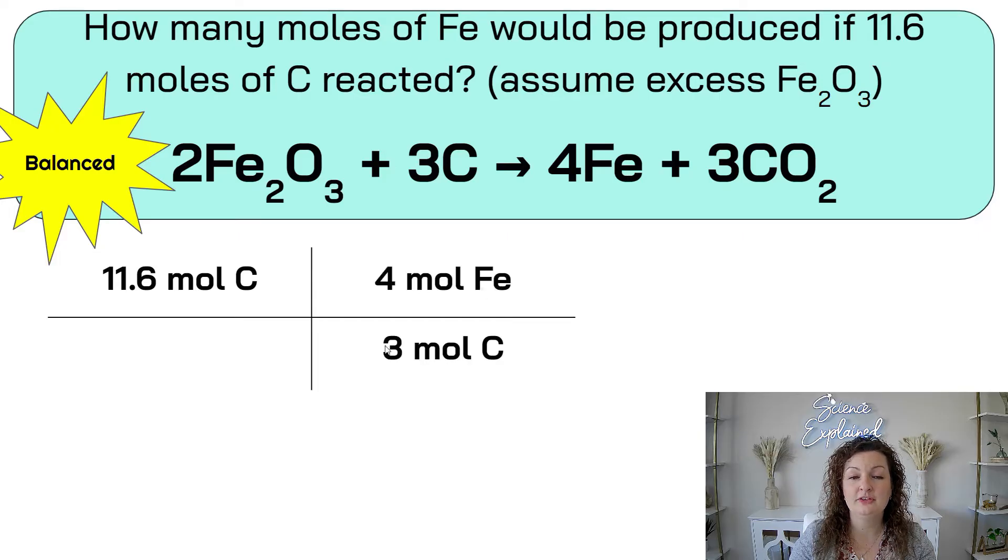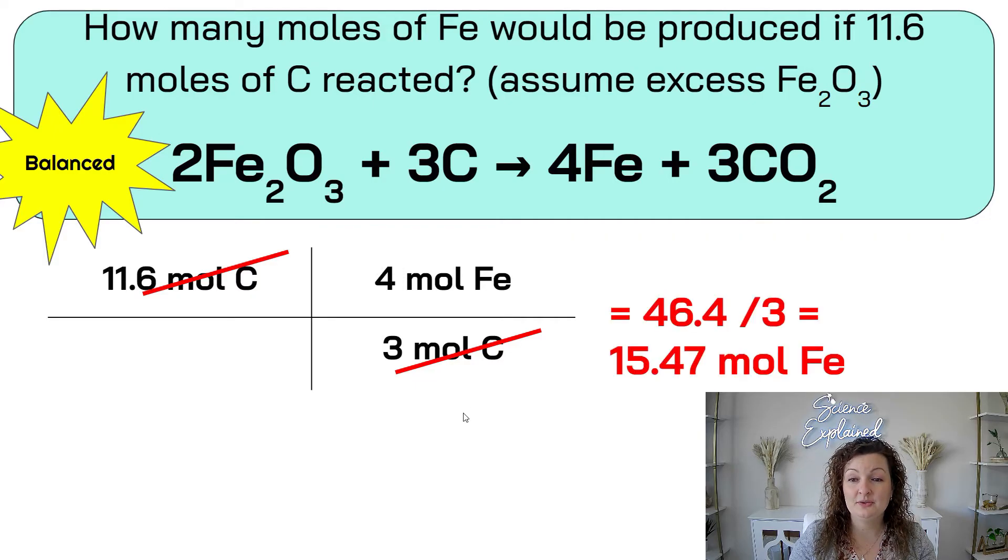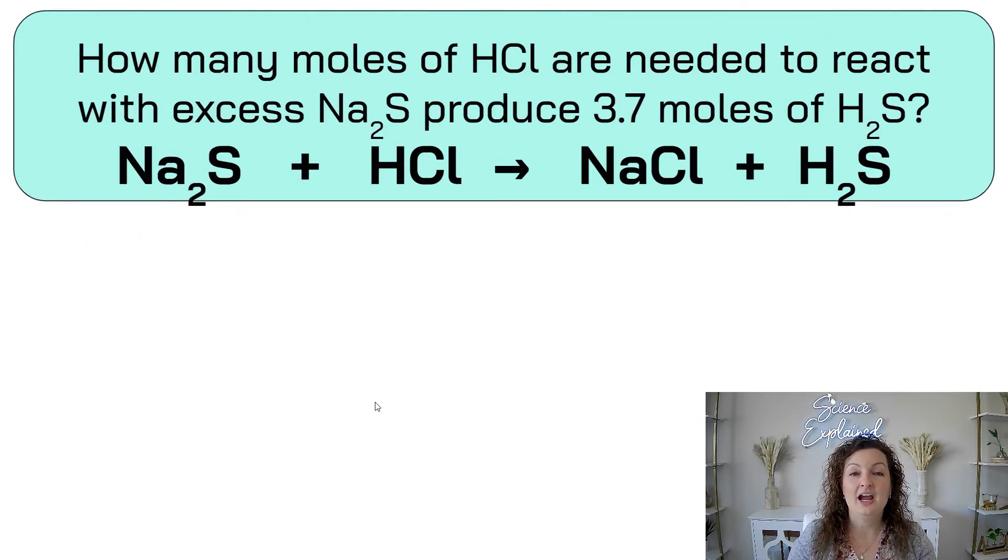All right, let's check it out. Start with what you're given, 11.6 moles of carbon, which means diagonal down has to be moles of carbon. So we need to look for carbon. It's right here. So it's 3. So there's going to be 3 moles of carbon on the bottom. The top is what the question asks you for. How many moles of iron? So I look for iron, and that's right here, and it is 4. 4 moles of iron, and we said the bottom was 3 moles of carbon. Now we do our crossing out of units, and we are left with moles of iron. Perfect. Exactly what we want. Now we can do our math. 11.6. We're going to multiply that by 4, and then divide by 3, and we end up getting 15.47 moles of iron.